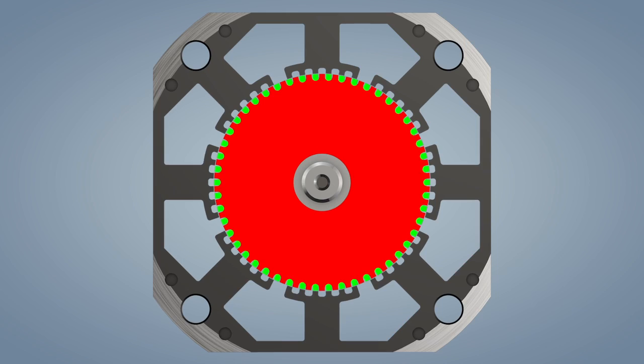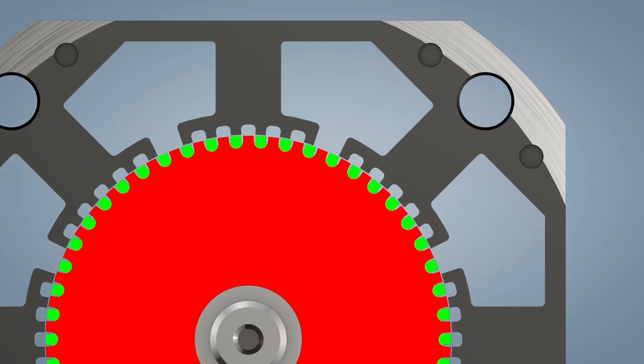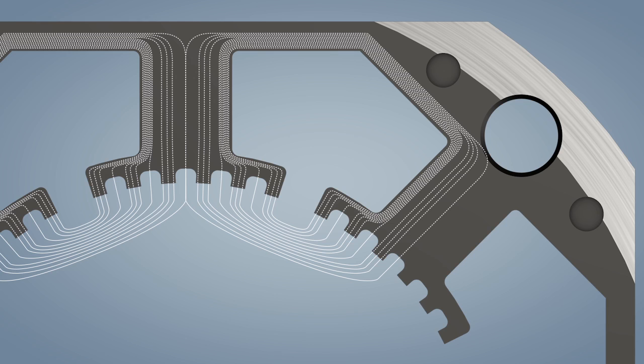The stator design remains roughly the same, but the pole shoes have six teeth each to achieve aligning of the magnetic field lines at the tooth tips. With its eight pole shoes, the stator has 48 teeth, two fewer than the rotor.